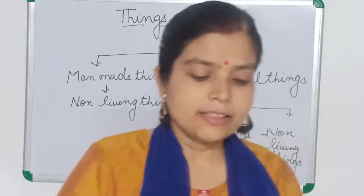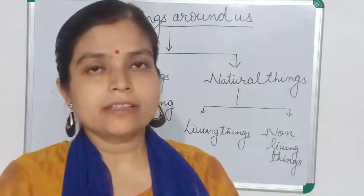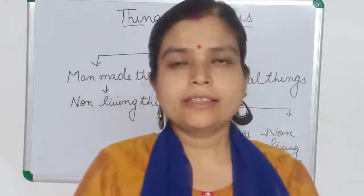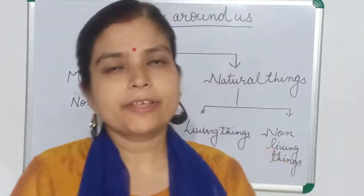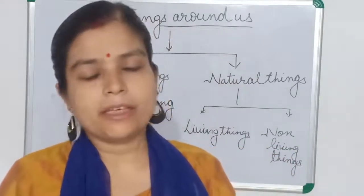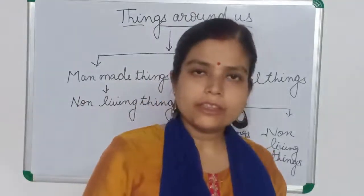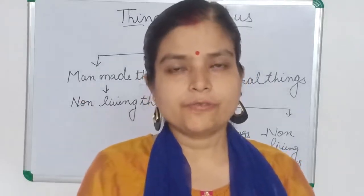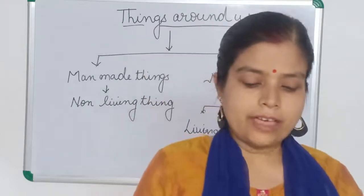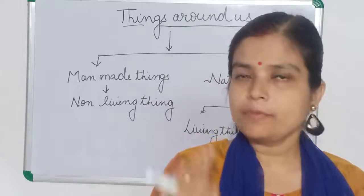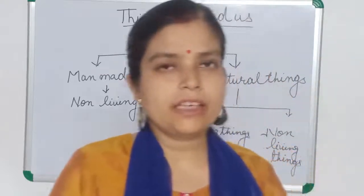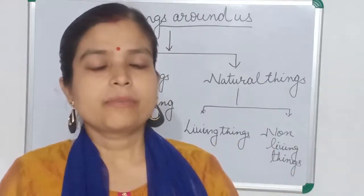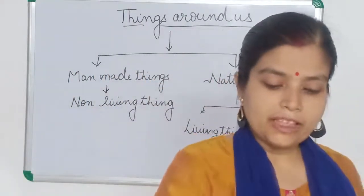Living things can breathe, but non-living things cannot breathe. All living things take in oxygen and give out carbon dioxide for respiration, whether they are animals or plants. Only for photosynthesis do plants take in carbon dioxide and give back oxygen to the environment. Living things breathe using different organs: we breathe with the nose and lungs, fish breathe with gills, leaves breathe with stomata, and insects breathe with spiracles.